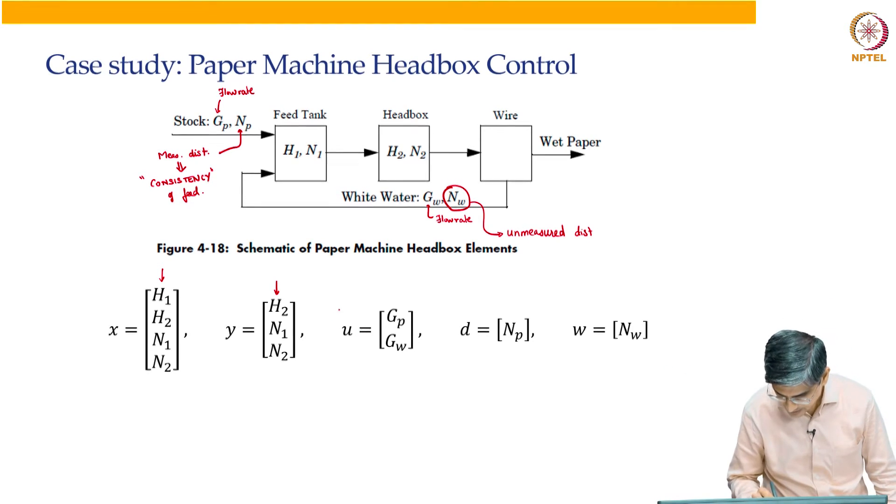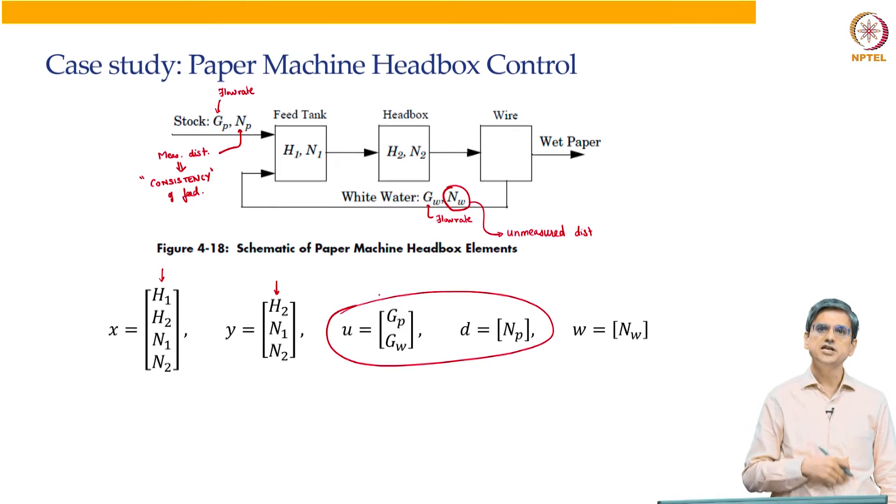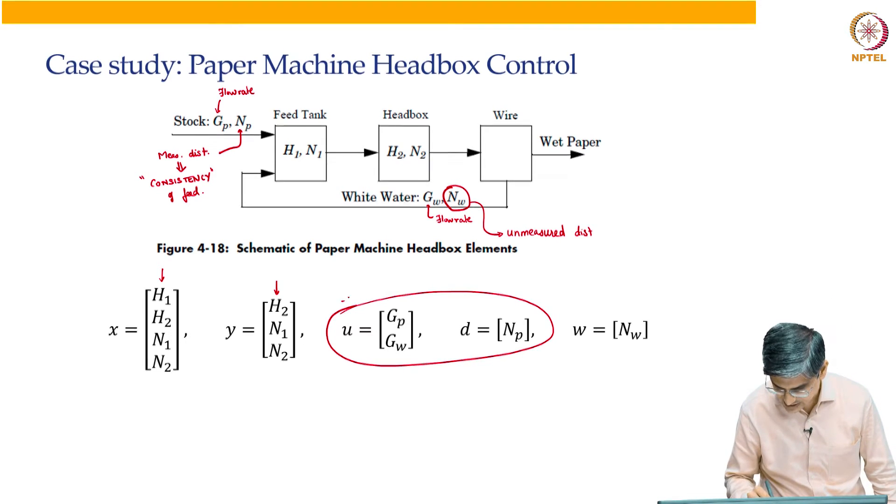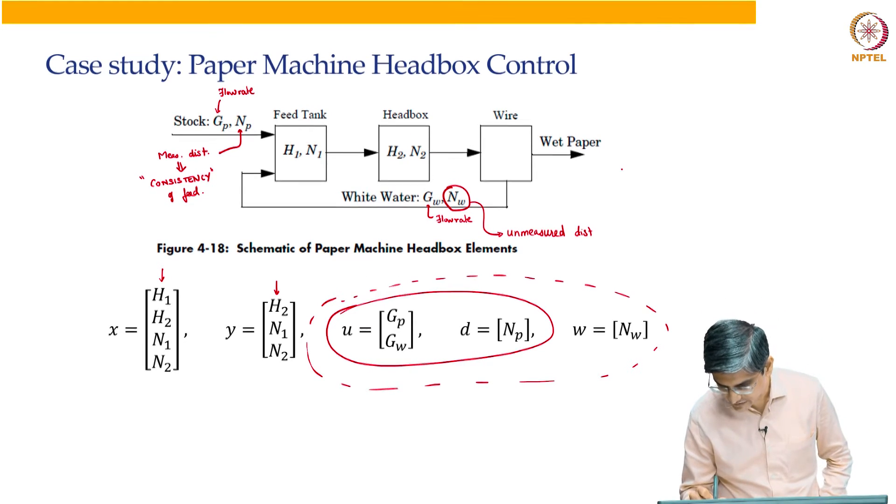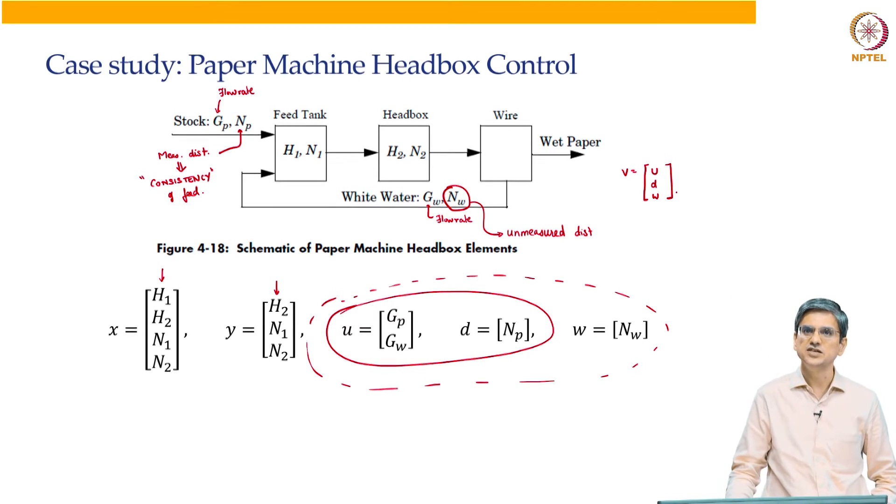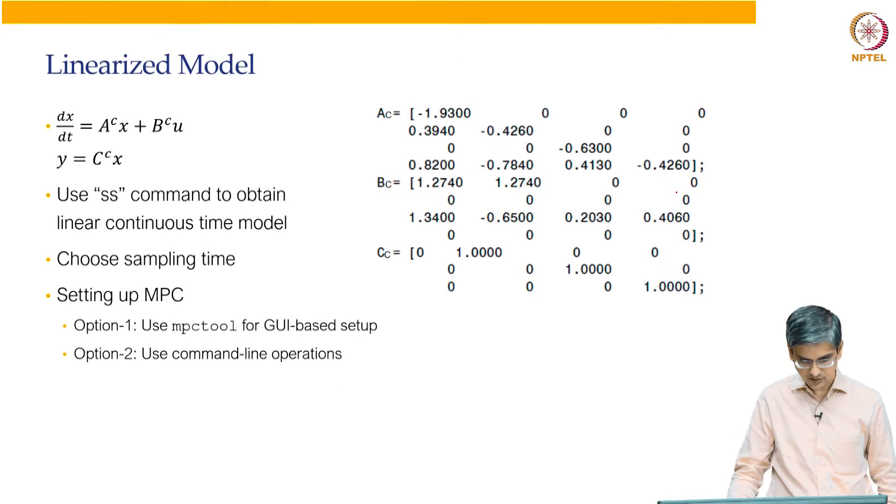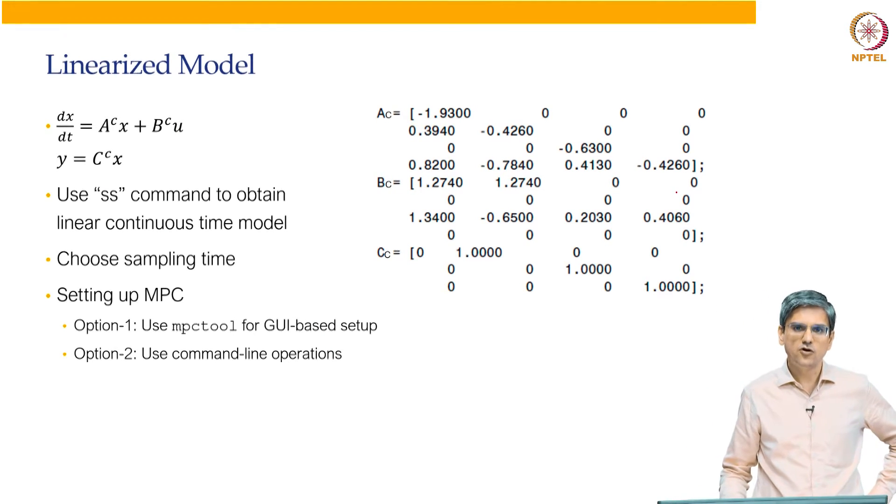Keep in mind that in MPC toolbox, what we had said is U and D forms input. So V is going to be U and there is a way in MPC toolbox to specify which one of these are manipulated inputs which are measured disturbances and which are unmeasured disturbances.